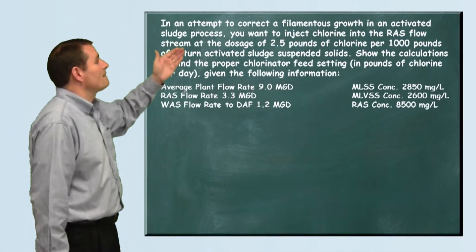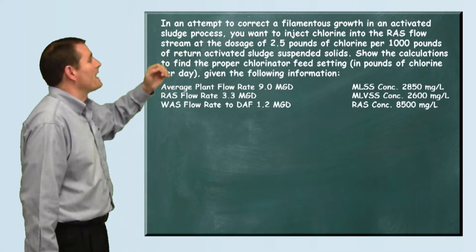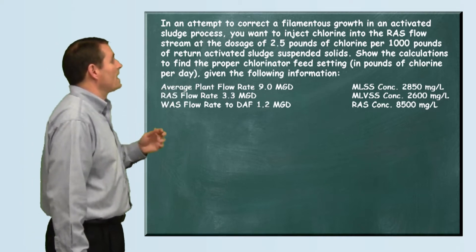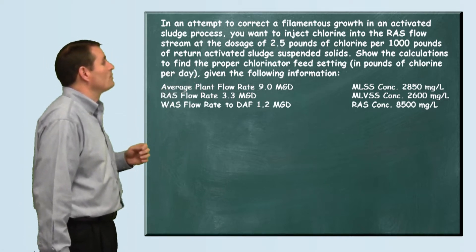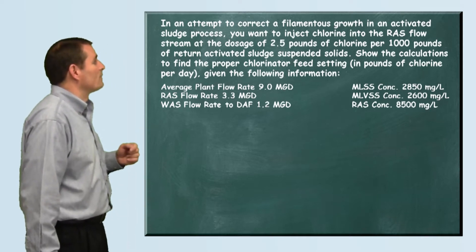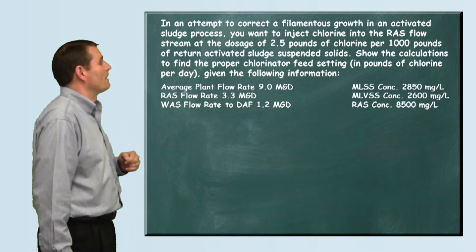The problem reads: In an attempt to correct a filamentous growth in an activated sludge process, you want to inject chlorine into the RAS flow stream at a dose of 2.5 pounds of chlorine per thousand pounds of return activated sludge suspended solids.